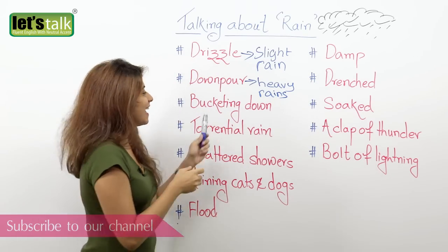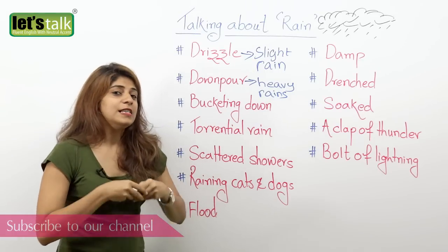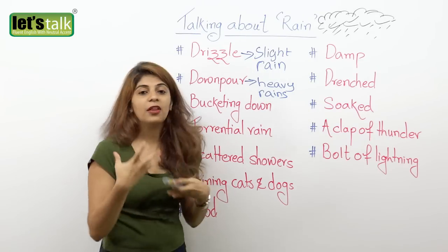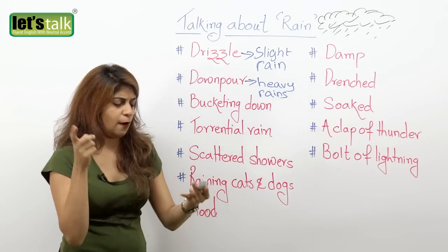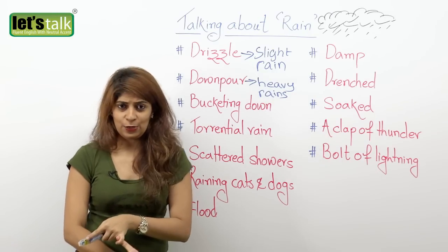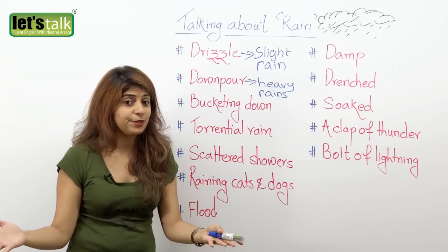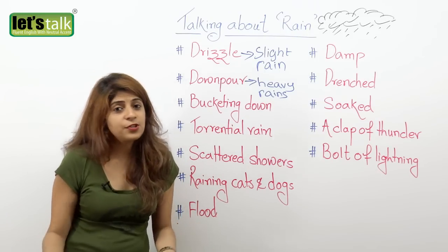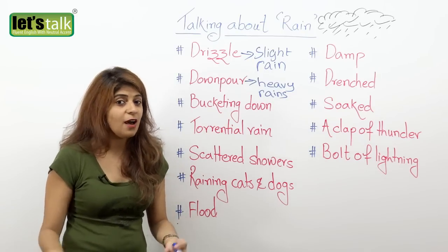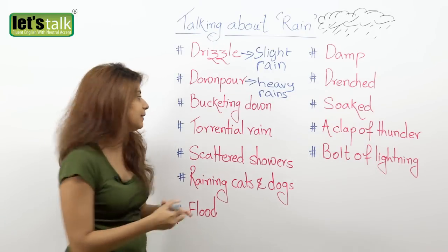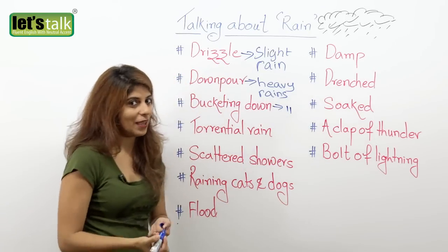The next one: it's bucketing down. So bucketing down is another way of saying it's raining heavily. Probably you're getting late to work, and once you get to your office — great excuse! I'm so sorry I'm late, it was bucketing down. So bucketing down means it was raining heavily.